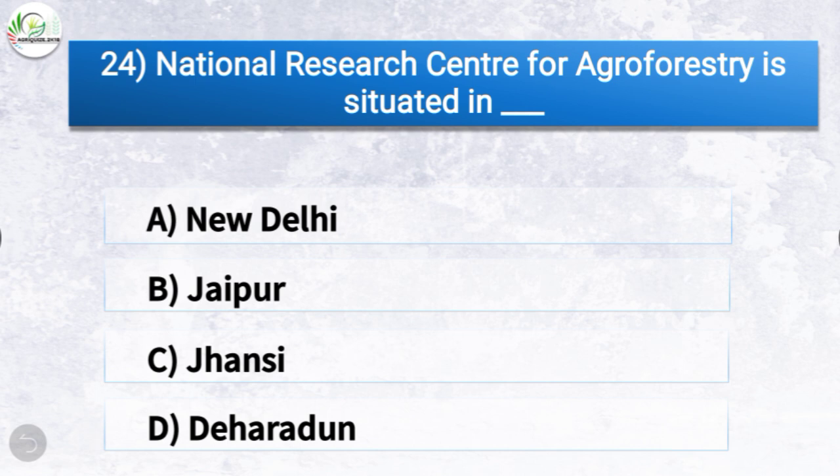Question number twenty-four: National Research Centre for Agroforestry is situated in which city? The options are New Delhi, Jaipur, Jhansi, or Dehradun. The correct answer is option C, Jhansi. So National Research Centre for Agroforestry is situated in Jhansi.